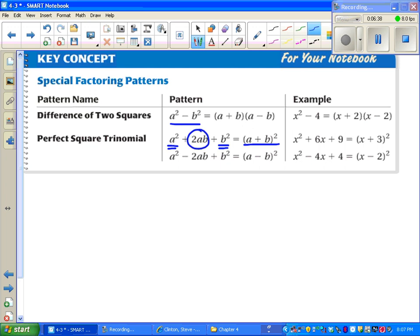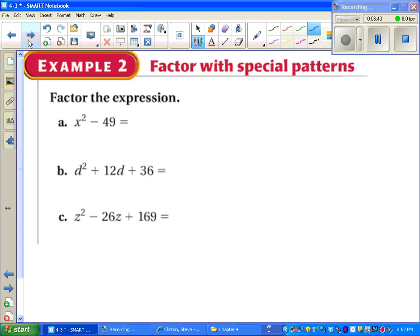So let's take a look. x squared minus 49. It looks like it follows the pattern of something squared minus something squared. x squared minus 7 squared. So we use our formula. If this formula looks familiar from Algebra 1, that's because it is.